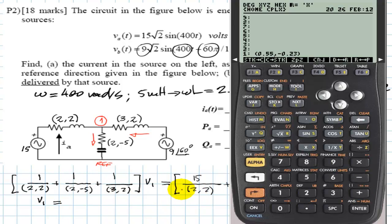On the right-hand side we have 15 over (2+j2). Then 9∠60° - for that I send the calculator to polar form, enter 9 space 60 degrees, then back to rectangular, divided by (3+j2). I sum them, and that is the right-hand side.